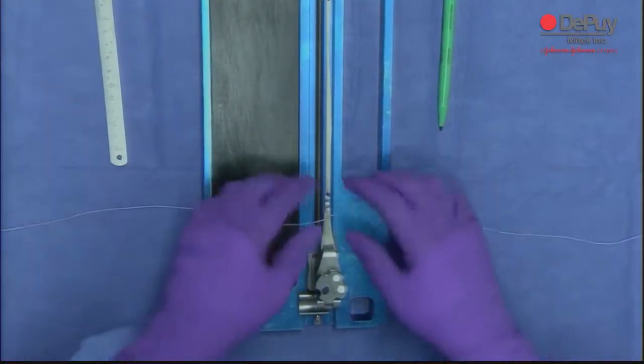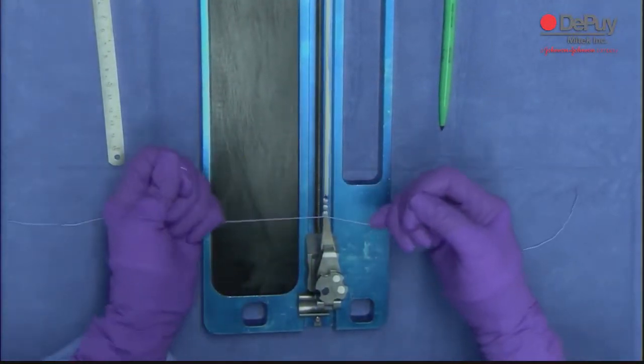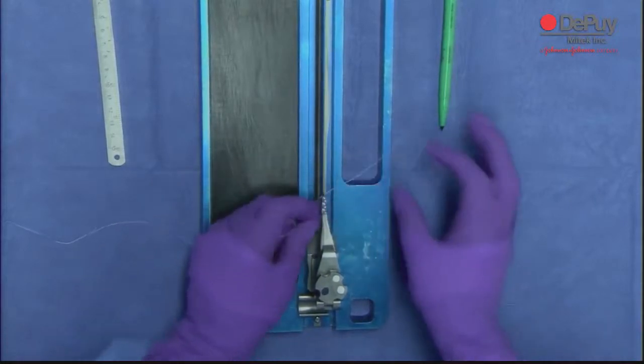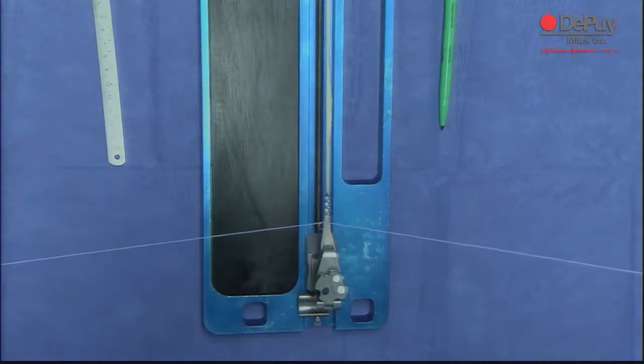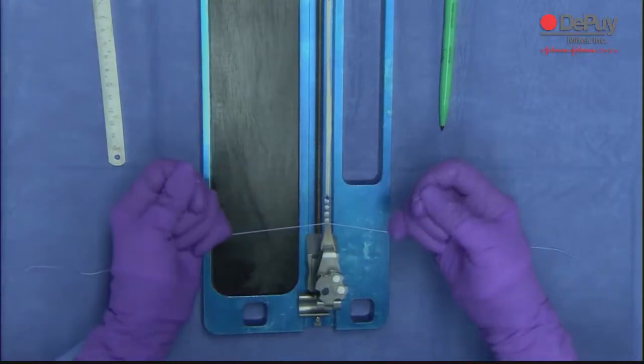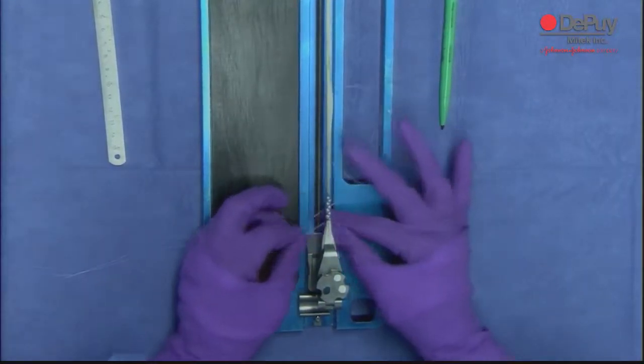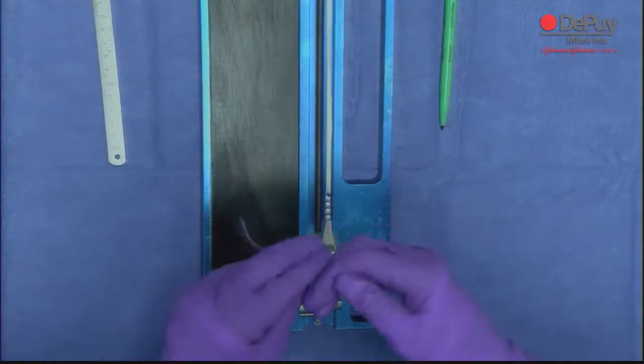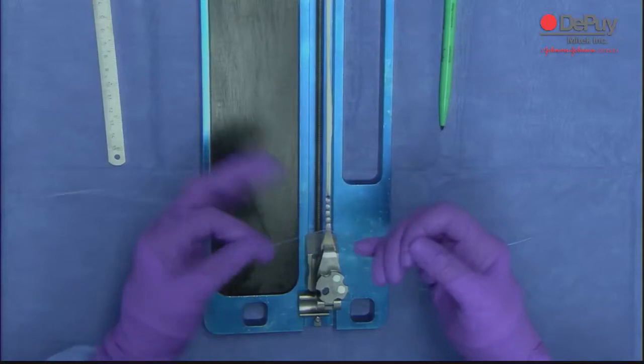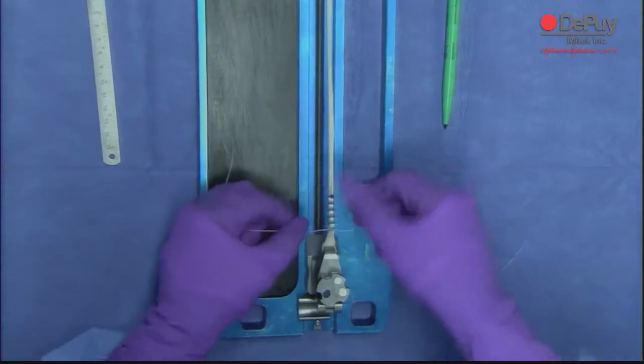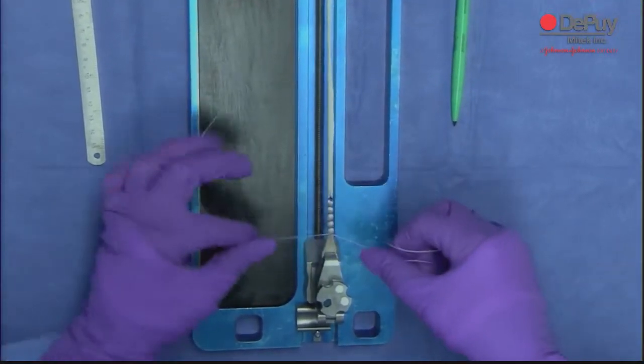What I do is space the sutures about five millimeters apart, and I do six knots. That was the fifth, now is the sixth. You want to leave this five millimeters apart because you want to leave this tissue out so the graft will heal into bone.